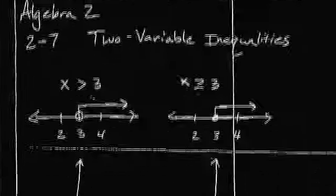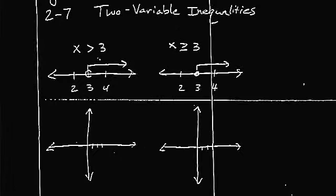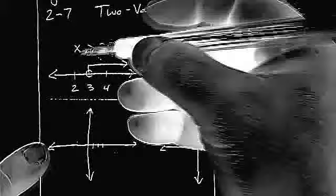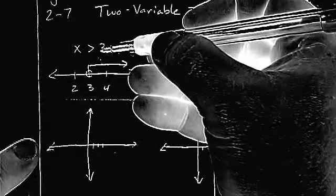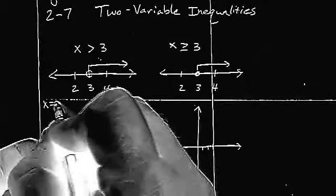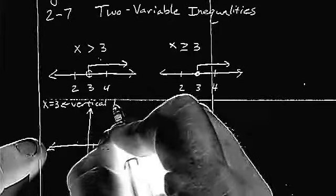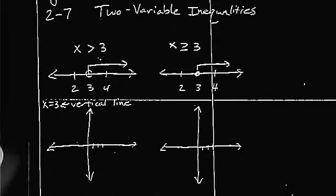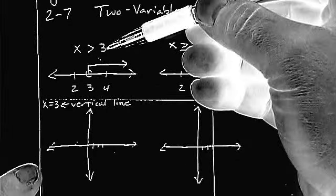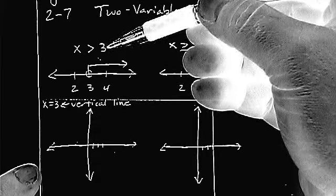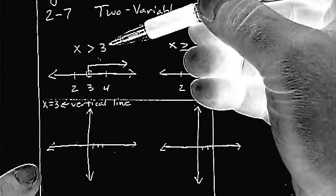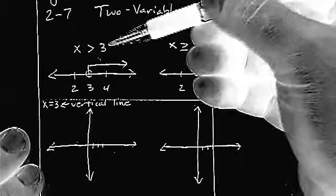How would that look different if we switched gears and we went to a two variable situation? In other words, we have an x-axis and a y-axis. Everybody should know that x equals 3 is a vertical line. This particular one says that we do not want that vertical line, but we want everything to the right of it.